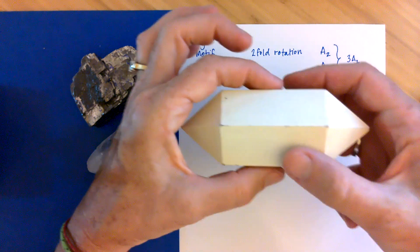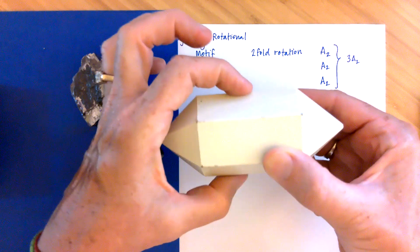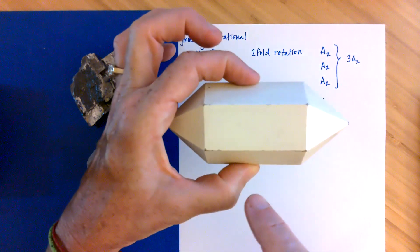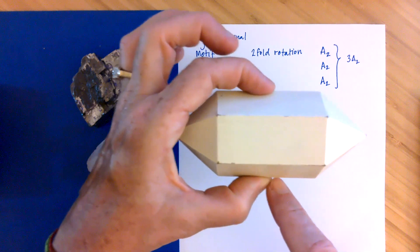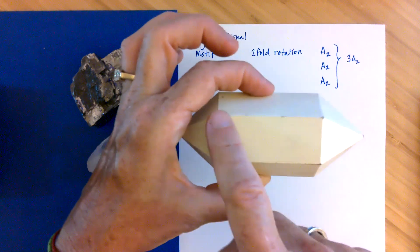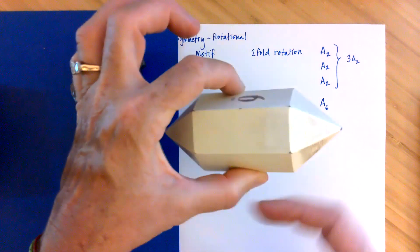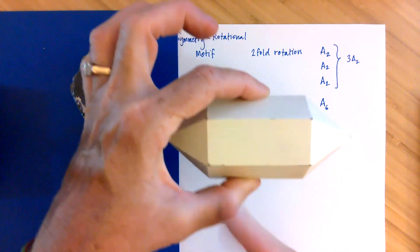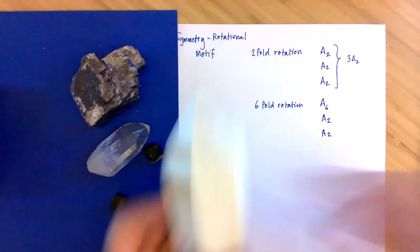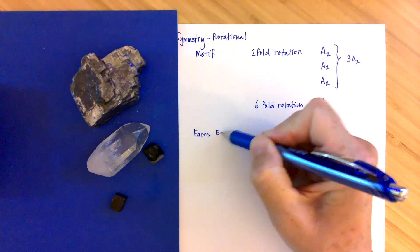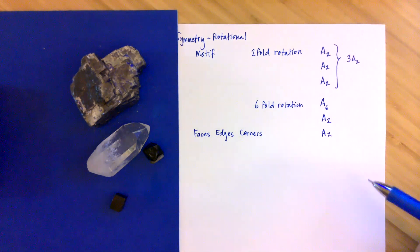I also want to test the edges — the intersection of two faces. An axis goes through the direct center of the block, with the end of the axis at the bottom opposite edge. I have one rectangle with two right- and left-facing triangles. I rotate it — there's the same motif — I rotate it again and I'm back at the beginning. So I've found another A2 on this block. We need to go through all the faces, all the edges, and all the corners or points to look for these axes.